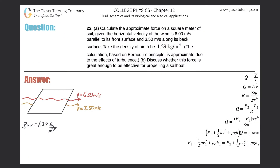Number 22, letter A. Calculate the approximate force on a square meter of sail given the horizontal velocity of the wind is 6 meters per second parallel to its front surface and 3.5 meters per second along its back surface. Take the density of air to be 1.29 kilograms per cubic meter.